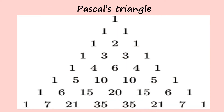A Pascal's triangle starts with one. To move to the next row, we repeat that one and then add it to the next term, but since there is no next term, we repeat the one again. In the second row, we repeat the one, but we have the first term and the second term together which gives us two, and then we repeat the last term which is one.